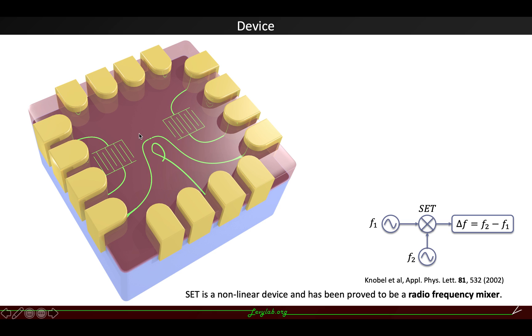which means it can mix two different frequency signals and give us the difference frequency signal. To do that, we put a single electron transistor in the middle of a pair of IDT structures and use these IDT structures to generate two different surface acoustic wave signals to measure the difference frequency signal.